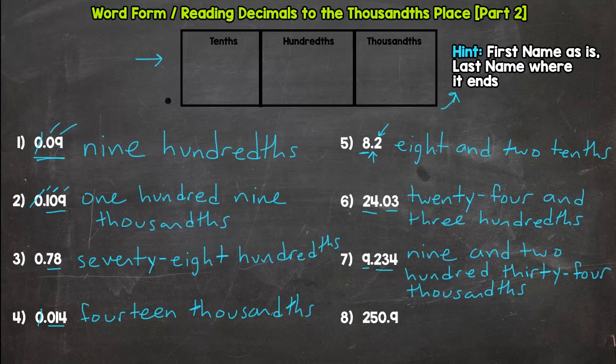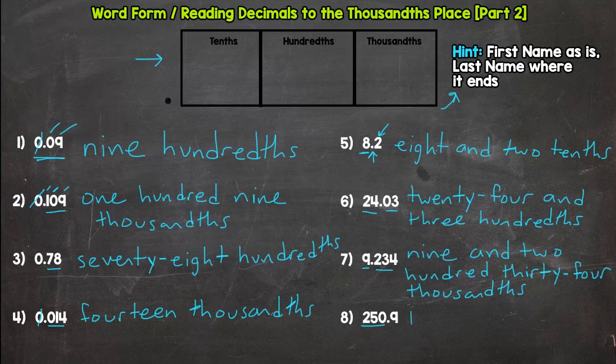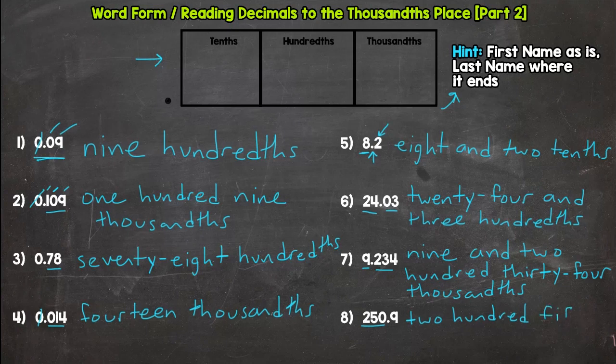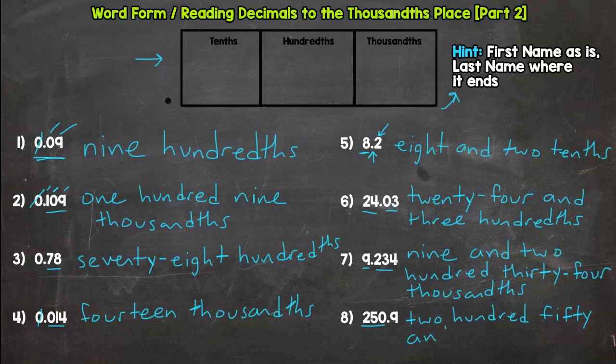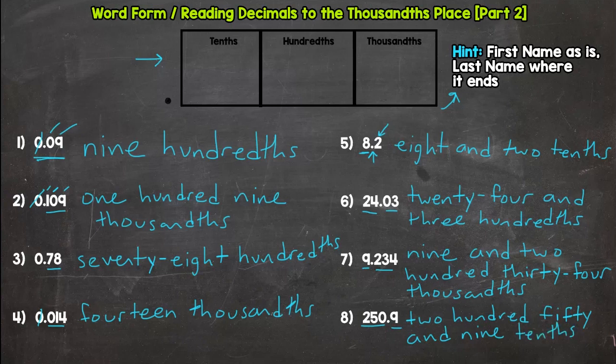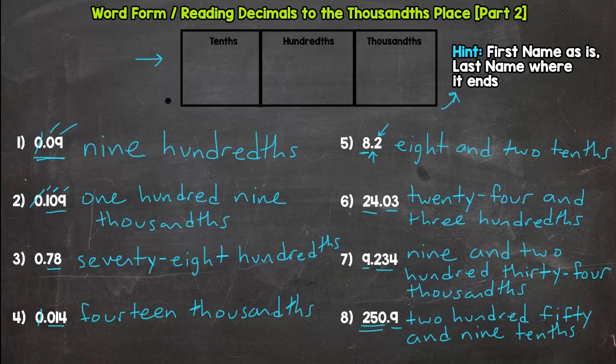All right. Let's do the last one. Read the whole number. Two. Hundred. Fifty. And. As is. Nine. Tenths. Let's read it back and check. Two hundred fifty. And. Nine. Tenths. We got it.